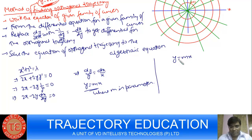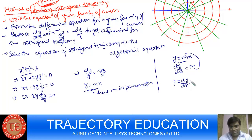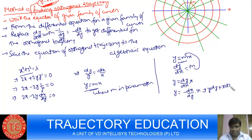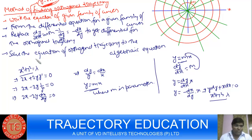So you see, the family of straight lines is the orthogonal trajectory of the family of circles. Similarly, proceeding vice-versa: the orthogonal trajectory of the family of straight lines — the differential equation of the family of straight lines is dy/dx = m. I replace dy/dx with minus dx/dy. That gives the equation of the orthogonal trajectory. If you solve this, you get x² + y² = lambda, where lambda is an arbitrary constant — that is the family of concentric circles.